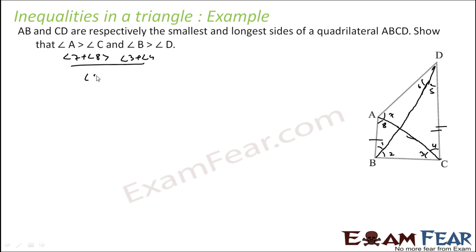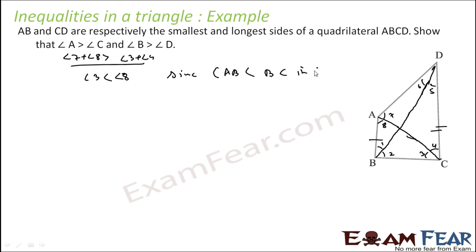So angle 3 will be less than any other angle. Angle 8 is greater than angle 3. Since AB is smallest, if you compare AB and BC, AB is smaller. Because in this whole quadrilateral AB is smallest. So since AB is less than BC, one relation we have got: angle 3 and angle 8. The other relation I have to find is between angle 7 and angle 4.